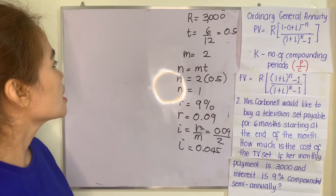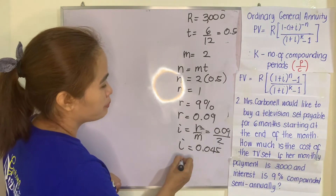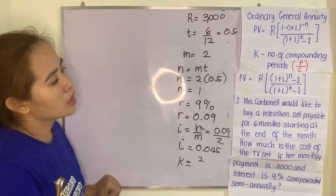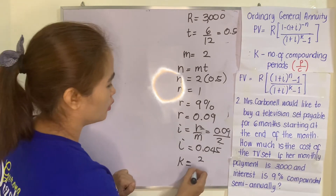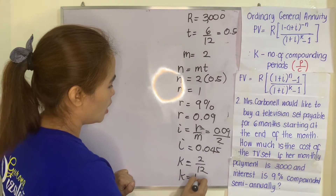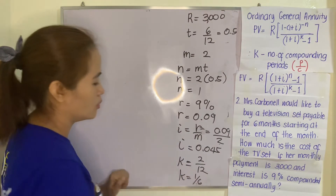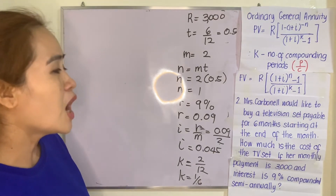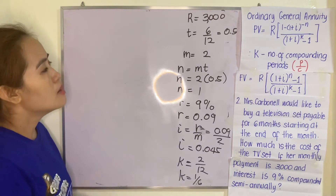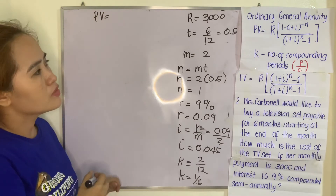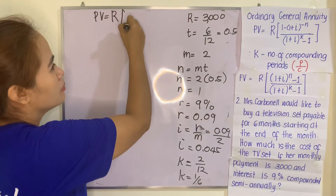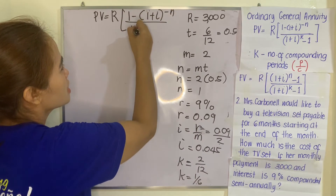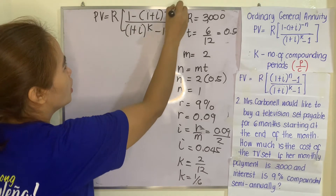Next, our K equals P over C. P is M which is 2, divided by the number of months in the compounding period which is 12, so K equals 2/12, or 1/6. The question asks for the cost of the television set, meaning we are looking for the present value. PV equals R multiplied by (1 minus (1 plus I) raised to negative N), divided by ((1 plus I) raised to K minus 1).